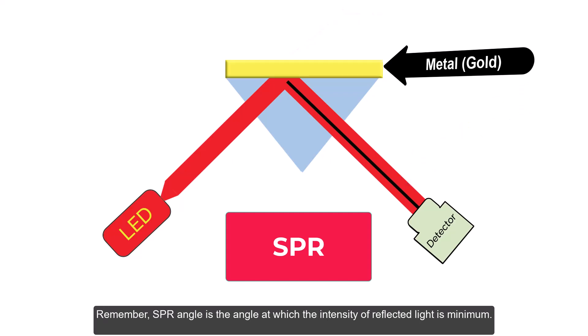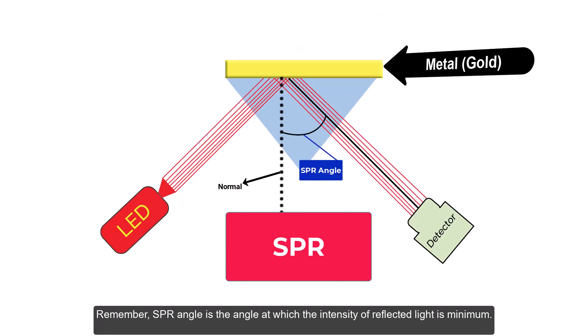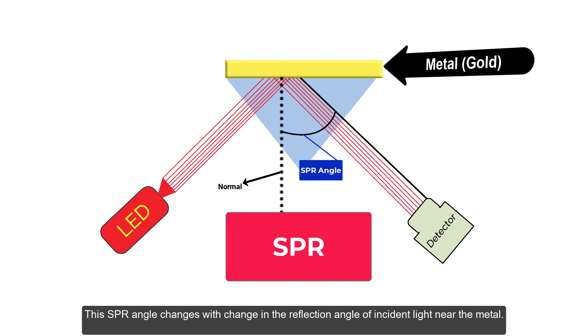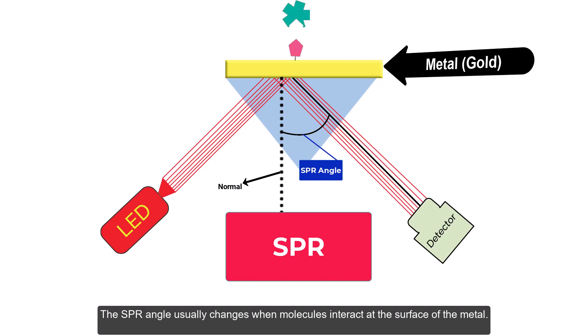The SPR angle is the angle at which the intensity of reflected light is minimum. This SPR angle changes with the change in the reflection angle of incident light near the metal, and it usually changes when molecules interact at the surface of the metal.